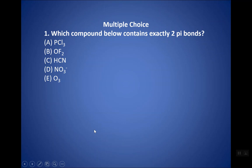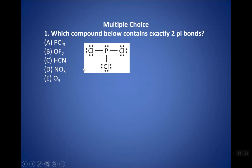Take a moment, try this example, then pause the video and check your work. Going over this, it's helpful to visualize or draw these structures. PCl3 looks like this — it has three single bonds, so it has three sigma bonds.